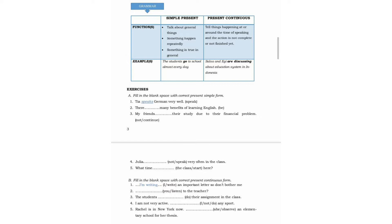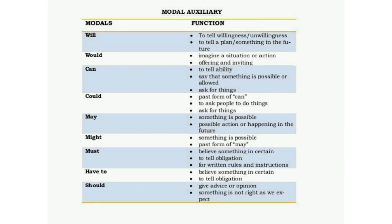Now let's talk about modal auxiliaries. Modals like will, would, can, could, may, might, must, have to, and should. Will is used to express willingness or unwillingness, to describe a plan, or to tell something in the future. Would is used to imagine a situation or action and to offer an invitation.